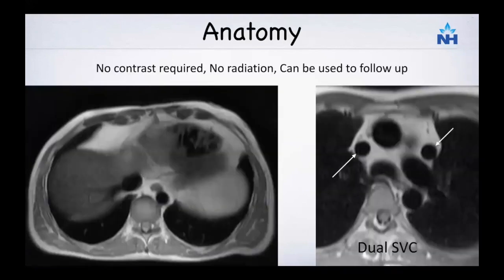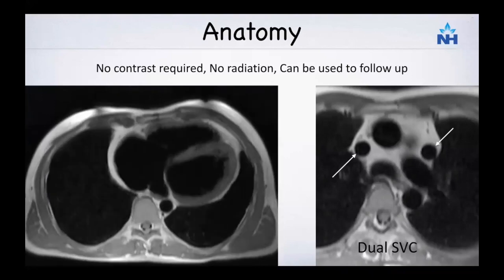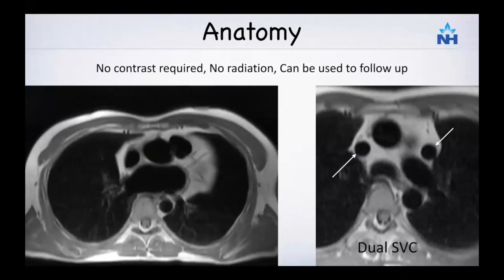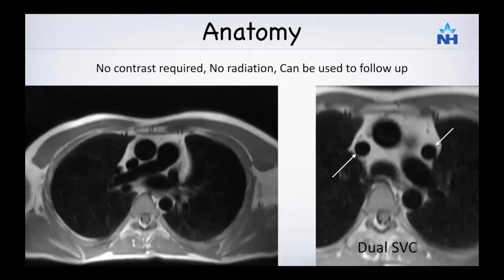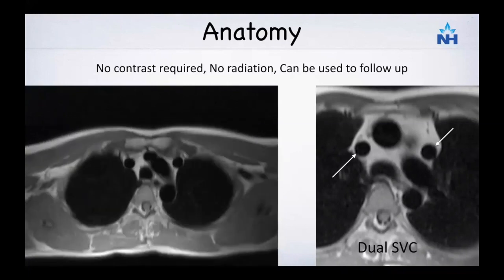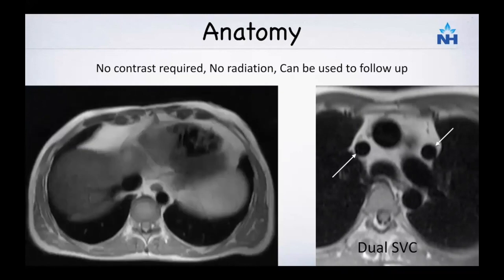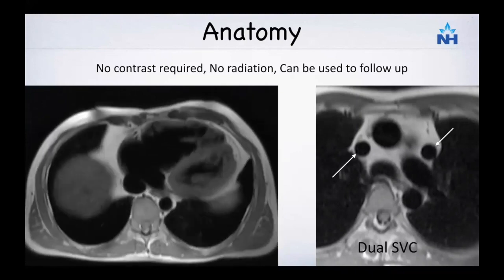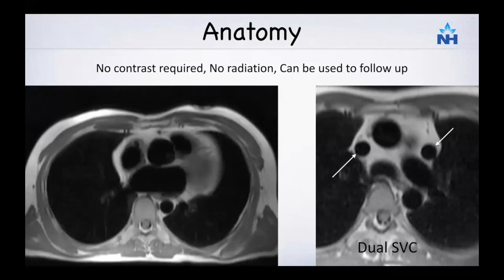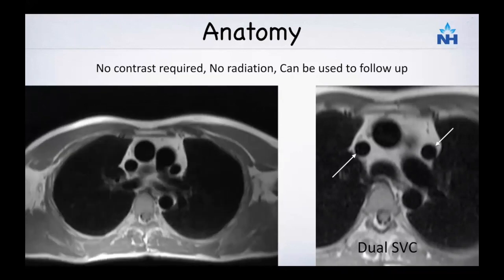What do we mean by anatomy? CT, as we all know, has been used for a long time and is excellent in demonstrating cardiac and extracardiac anatomy. But cardiac MR is also fantastic in demonstrating cardiac anatomy, with the advantage that you do not need to give any contrast to look at the anatomy, and there is no radiation exposure, so you can repeatedly use it for follow-up.